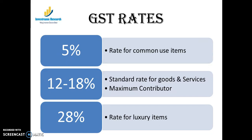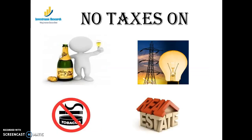The 28% rate applies to luxury items — big cars, big brands, and anything categorized as luxurious. Some items will not fall under GST: alcohol will still carry state VAT taxes, electricity will remain under state duty, and tobacco will attract both excise duty plus GST — not just GST alone. Real estate will still have stamp duty and remains outside the GST bracket.